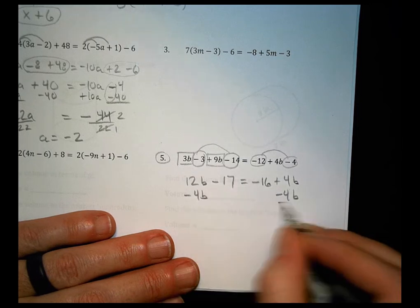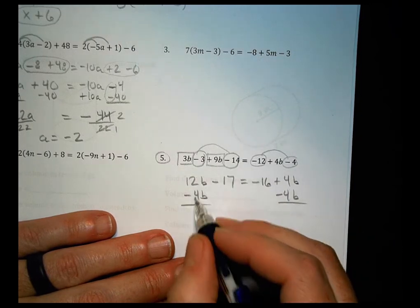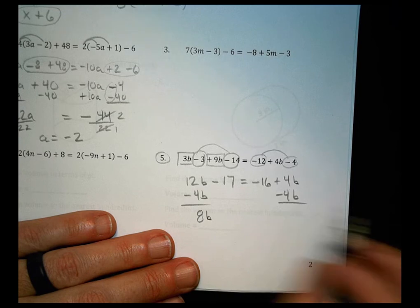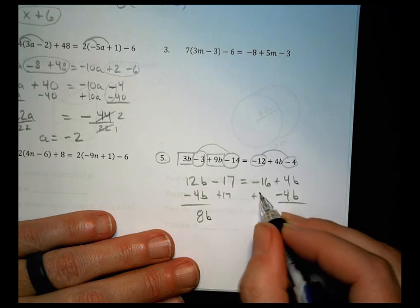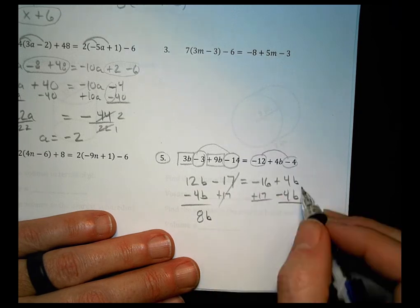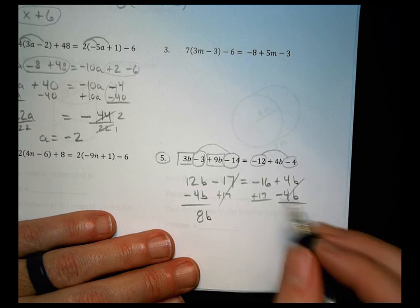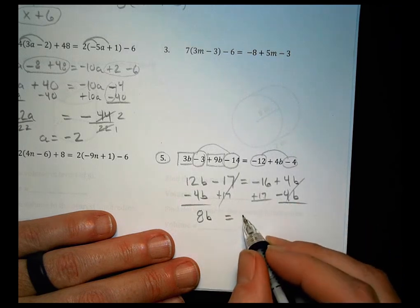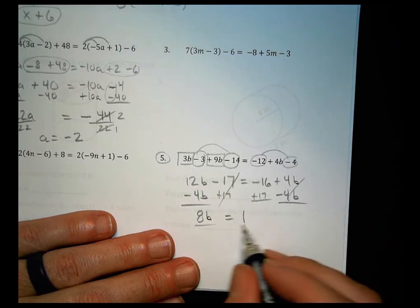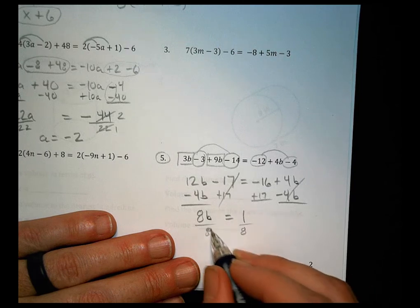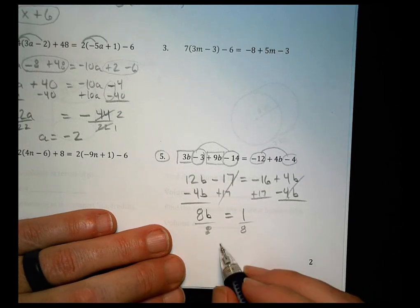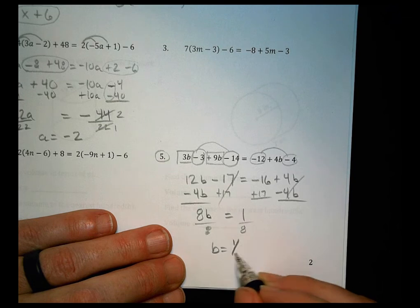Now we're going to move things around. Subtract 4b from both sides, 12 minus 4 is 8b. Let's add 17 to both sides, so negative 16 and positive 17 combine to give you 1. We divide both sides by 8, and we find that b equals one-eighth.